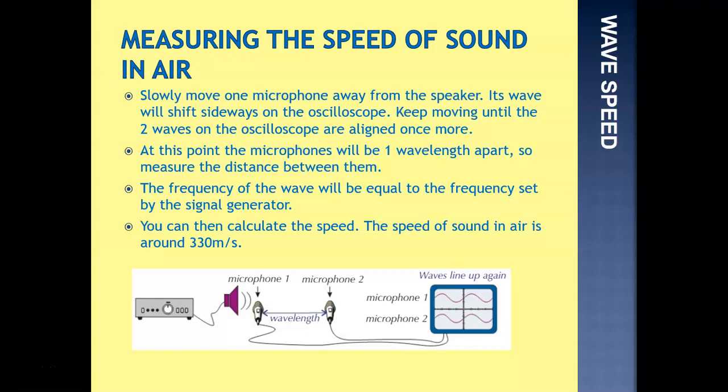The frequency of the wave is equal to the frequency set by the signal generator, so you can pick that up from the signal generator that you've been using. To then calculate the speed, you'd multiply the wavelength by the frequency set. You should get a speed of sound of around about 330 metres per second. You want to copy those steps down so we know how to measure the speed of sound in air. If you need to rewind the video, please do so to get the first half and then the second half.